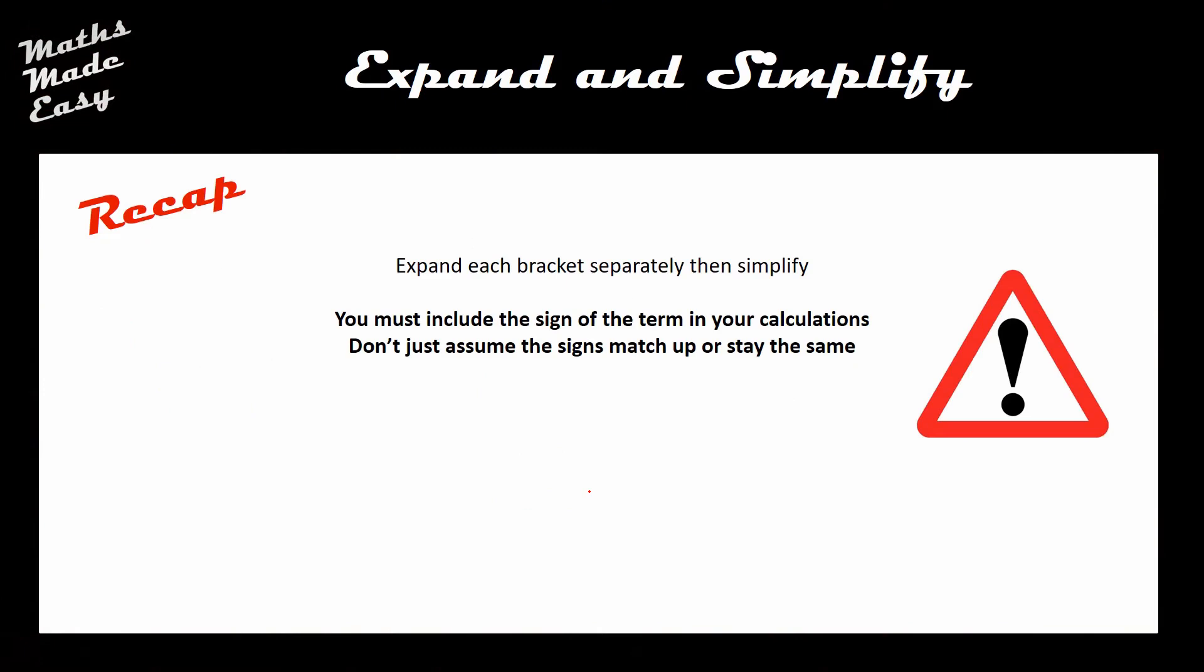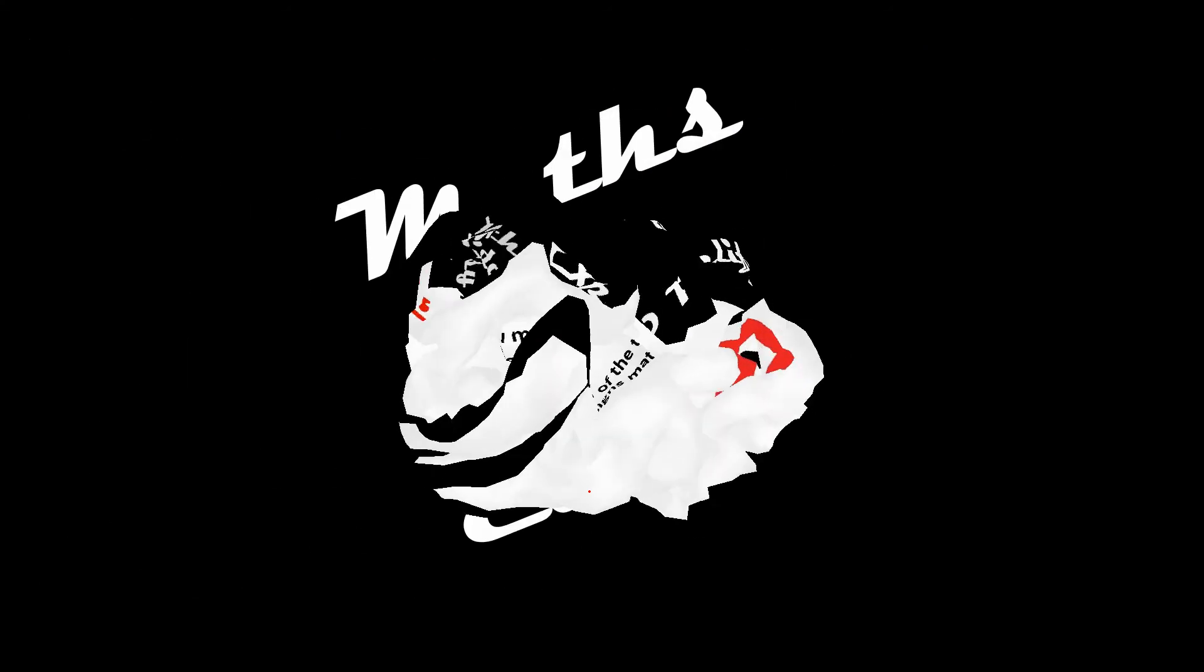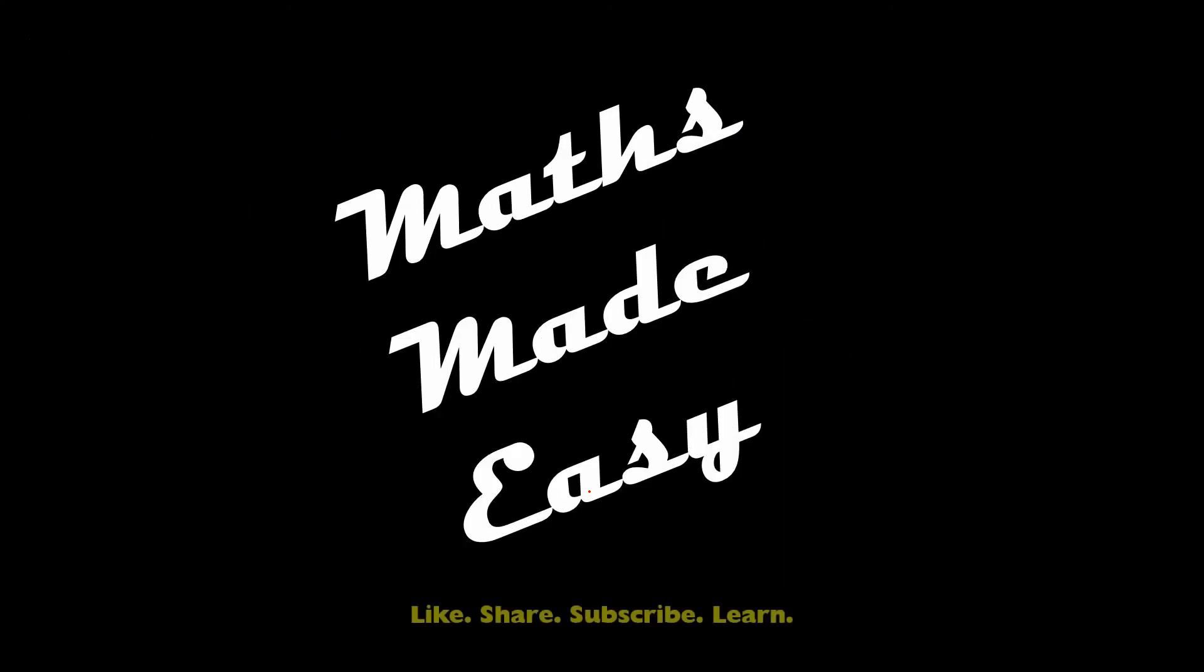Just to recap, you expand each bracket separately and then simplify what you're left over with. There's not too much to remember, but the absolute critical thing is making sure that you include whatever sign is involved in your calculations. No hard and fast rules about this is always negative or always positive. Just make sure you're thinking about multiplying those negative numbers together carefully. Thanks for listening. Hopefully this has been useful. Don't forget to like, share, subscribe, and see you next time.